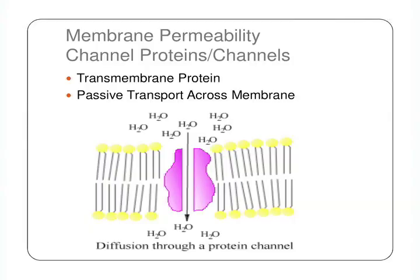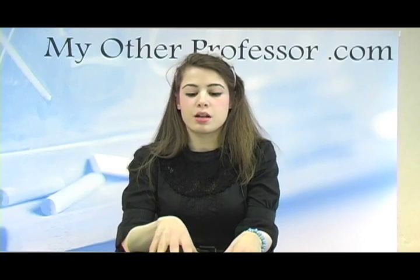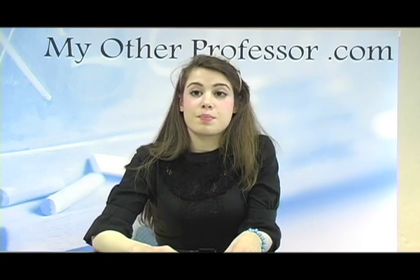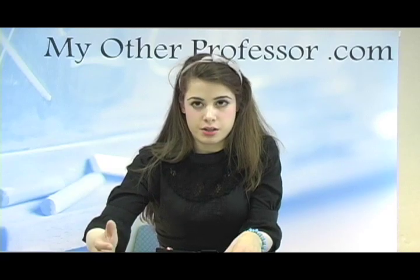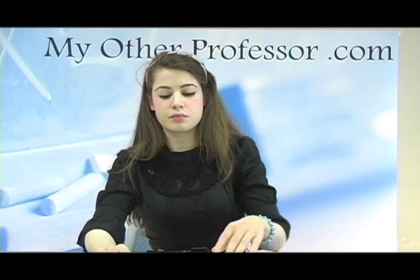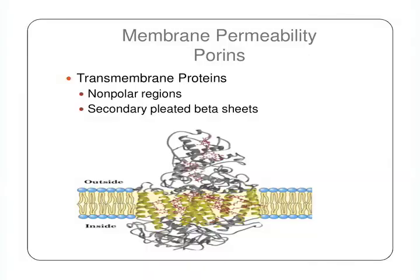Let's take a look at membrane permeability, starting with channel proteins. These transmembrane proteins span the whole length of the lipid bilayer and are involved in passive transport across the membrane. This transport is passive because it doesn't require any energy in the form of ATP, so molecules are easily allowed to pass through the membrane with no modification involved.